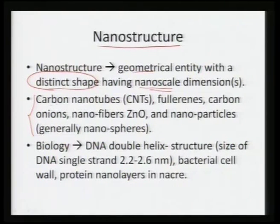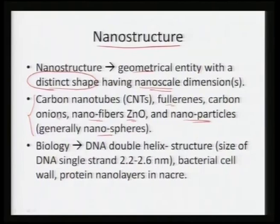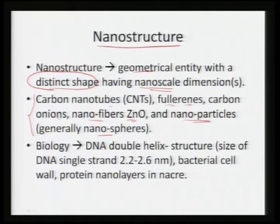Certain examples of nanostructures include carbon nanotubes, fullerene, carbon onions, nanofibers of zinc oxide, nanocrystals of diamond, and nanoparticles of gold, among many others. They can be tubular in shape as in carbon nanotubes, ball-shaped like a soccer ball as in fullerene, ring-shaped like carbon onions, or spherical like nanoparticles.